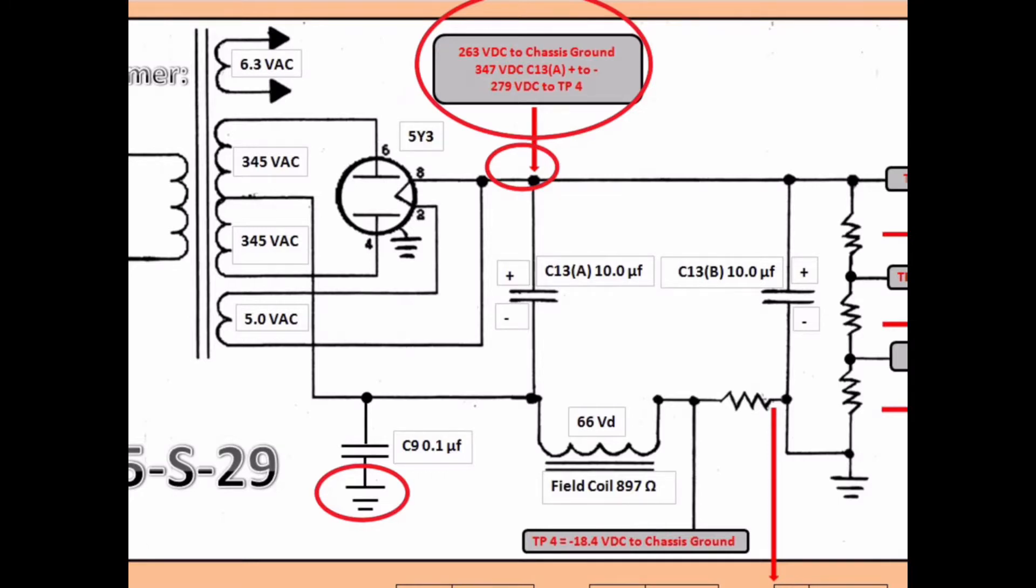In addition you can see 347 volts DC as I called out on the plus side of the electrolytic as referenced back to the negative side of the electrolytic.